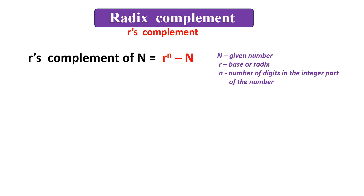Consider example number 629, which is a base 10 number. Substituting into the formula: r is 10, and n is the number of digits in the integer part. This number has only the integer part with no fraction part. The number of digits is 3. So the formula gives 10 to the power of 3, minus 629. That is how you substitute values into the formula.